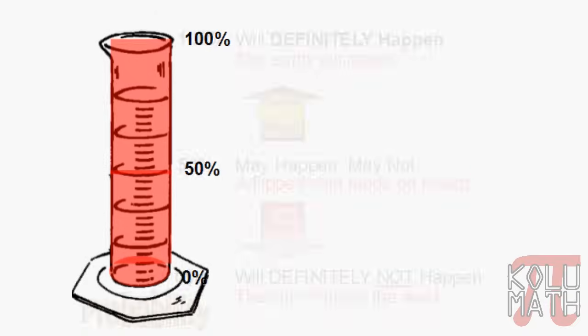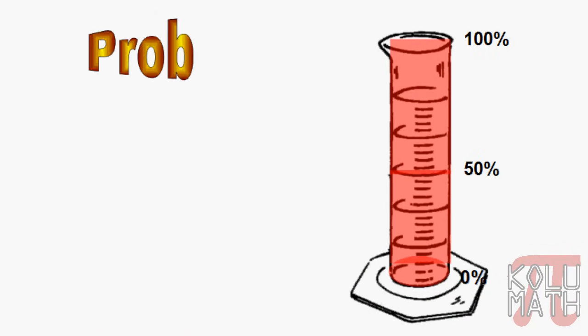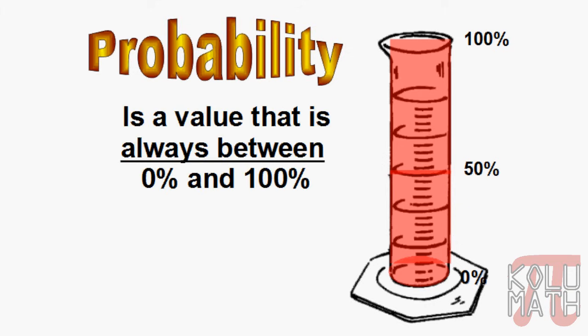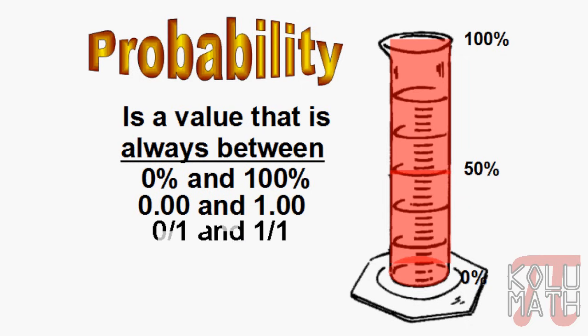It's important to notice that probability is always a value between 0 and 100%, or 0 and 1, or 0 and 1 as a fraction. Once we're at 100%, we're as sure as we possibly can be that something is going to happen. So if someone tells you they're 110% likely to do something, you know that's impossible — you can't be more than 100% probable because 100% is absolutely going to happen.